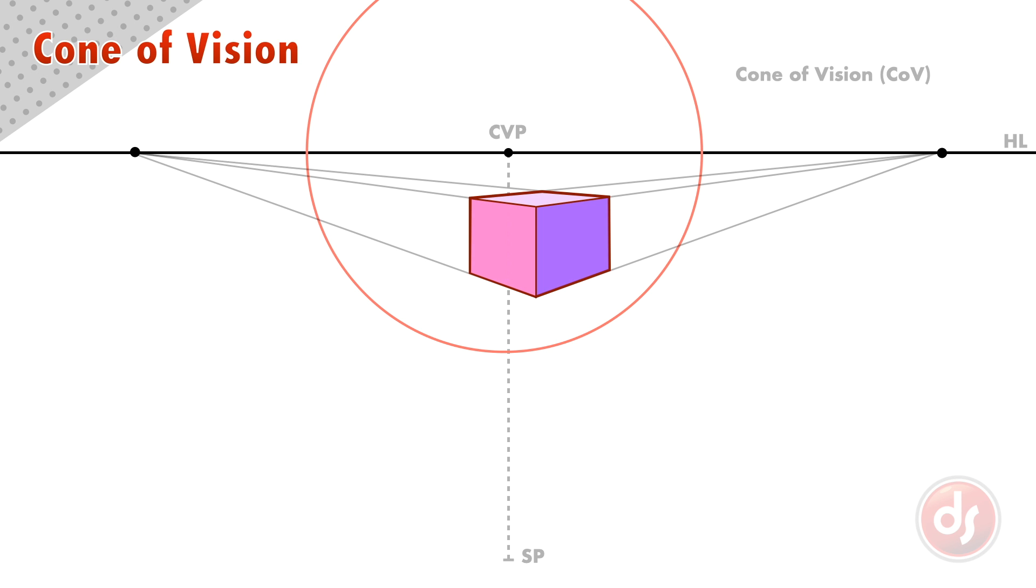If we draw another box breaking outside of the cone of vision, the amount of convergence we see here starts to look more extreme.